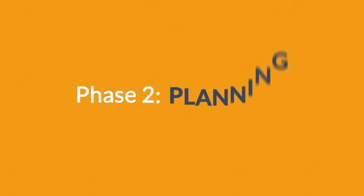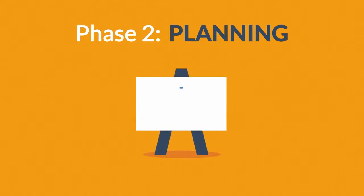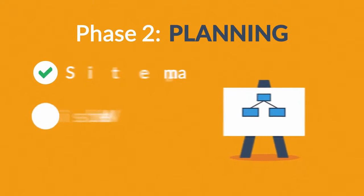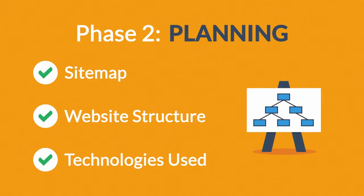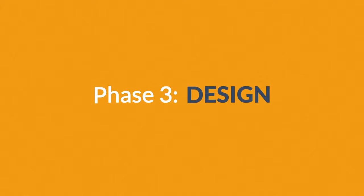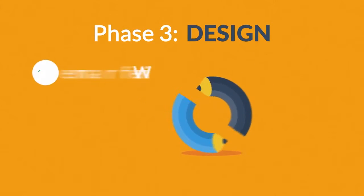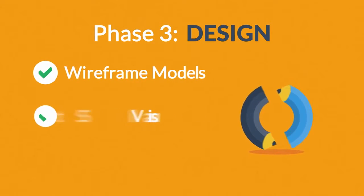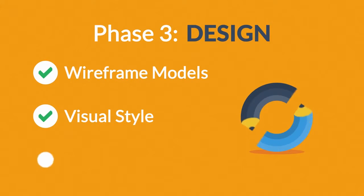Phase two: Planning. A plan includes a definition of the site map structure and the technologies that we're about to use. Phase three: Design. Not only do we focus on wireframe models and the visual style in this stage, but also on the usability of the user interface for the best possible user experience.